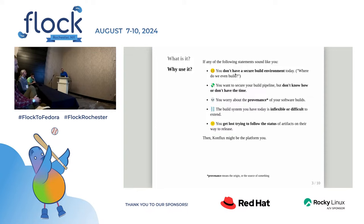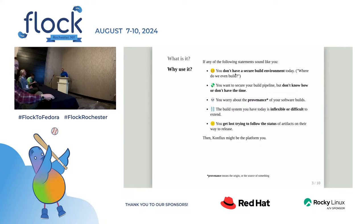Worrying about the provenance of your software builds is more and more in discussion recently. The most important point for Fedora is thinking about inflexibility and difficulty in changing the system. Making changes to the way things are built in Koji is a relatively difficult process, but in Conflux, we put a premium on making it easy to modify the way things are built while still putting guardrails in place to make sure unacceptable changes can't get released.